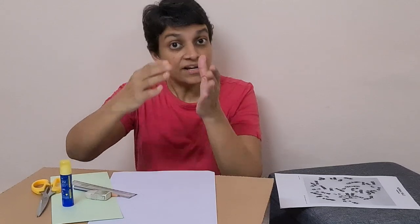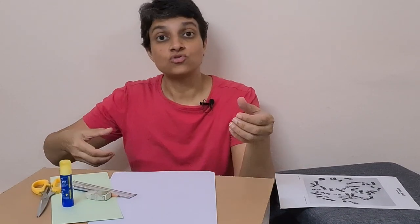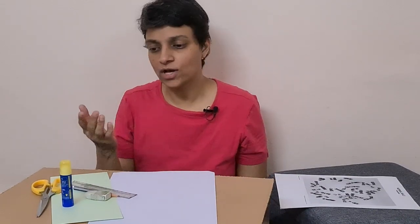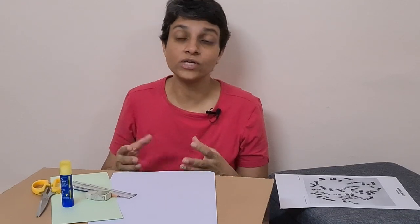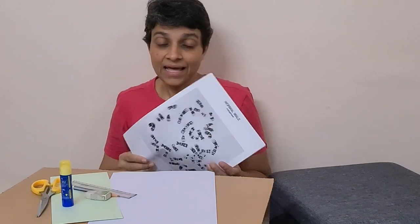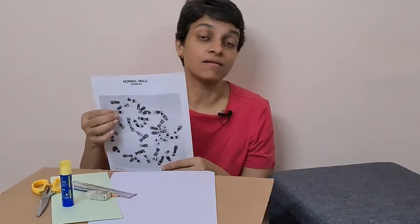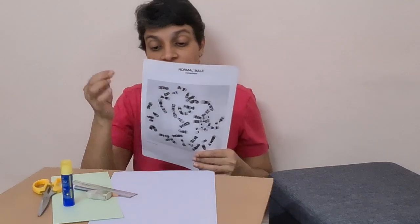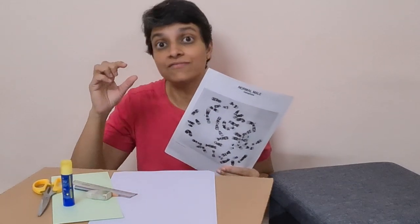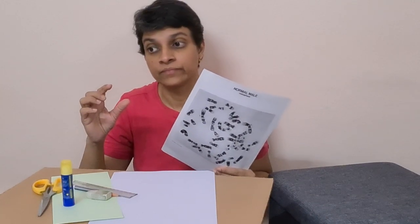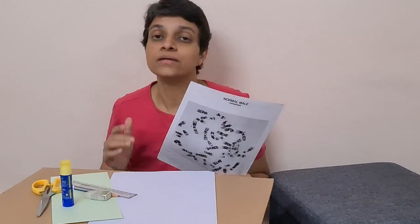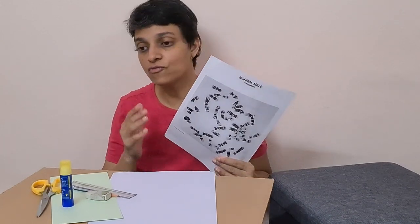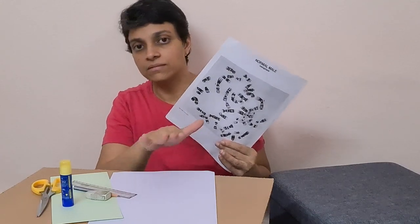We will arrange the chromosomes in their descending order of sizes. The criteria considered are: first, the size of the chromosome; second, the position of the centromere, because the position of the centromere clearly defines the morphology of the chromosome; and third, the banding pattern is also considered as one of the criteria for arranging chromosomes systematically.